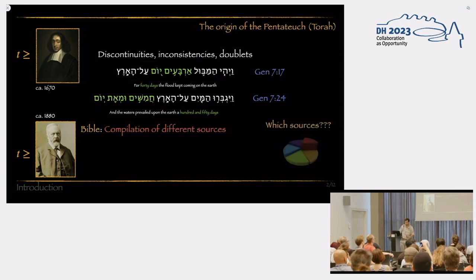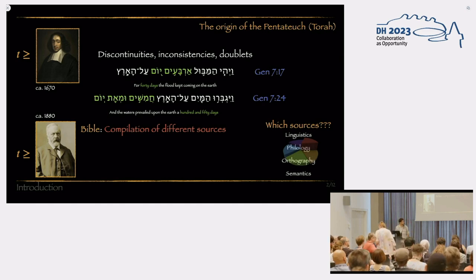But which sources are they? What he essentially did is he addressed the Bible as a pie chart, and split this pie chart into different pieces of the pie, where every piece is an independent, or rather independent textual constituent. He did this by performing linguistic, philological, semantic analysis, and so forth.